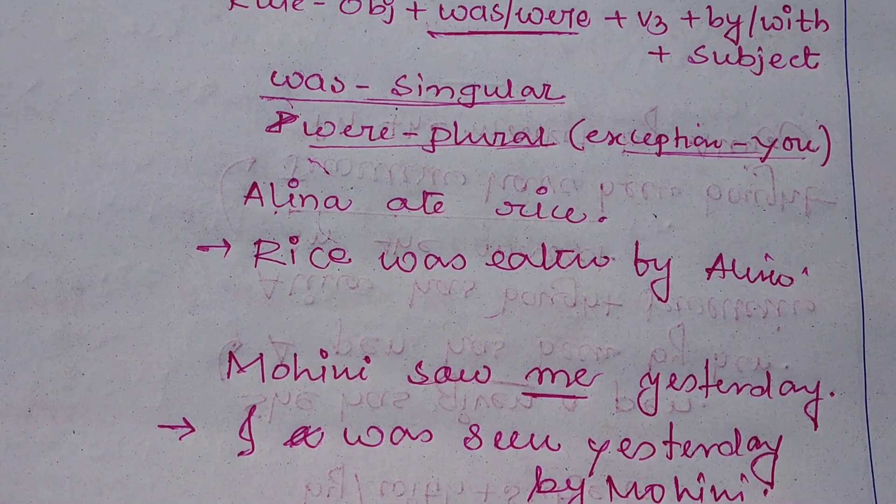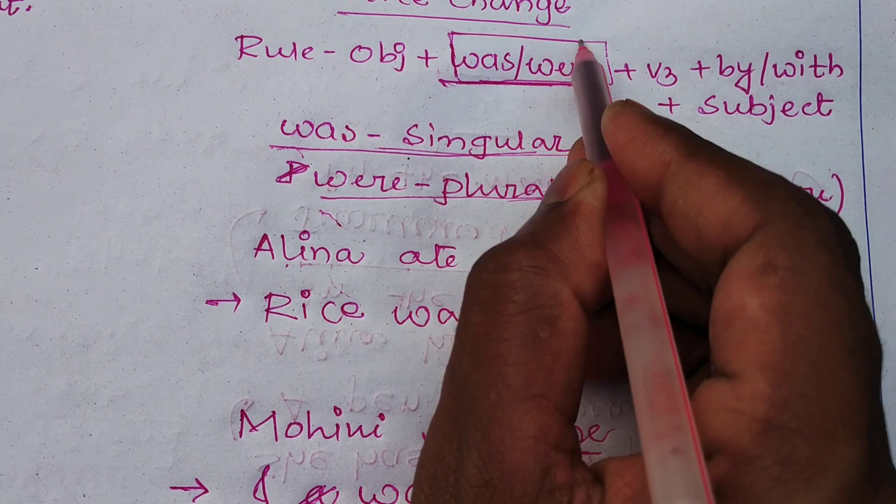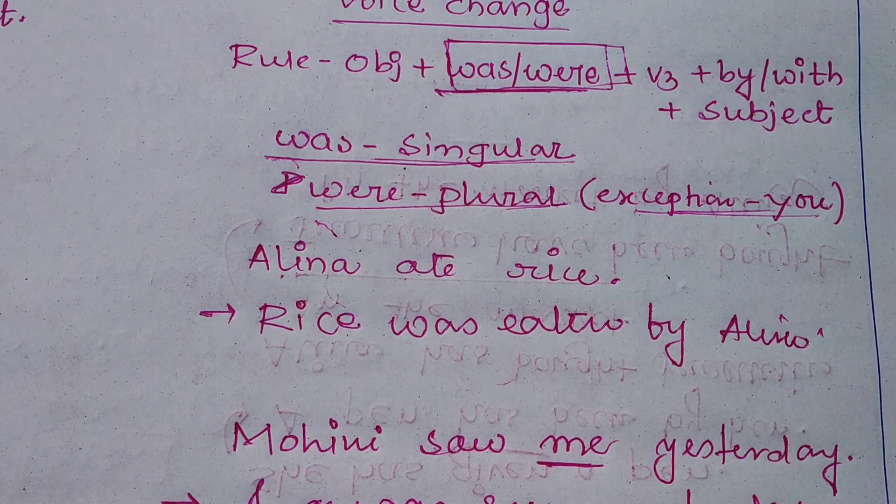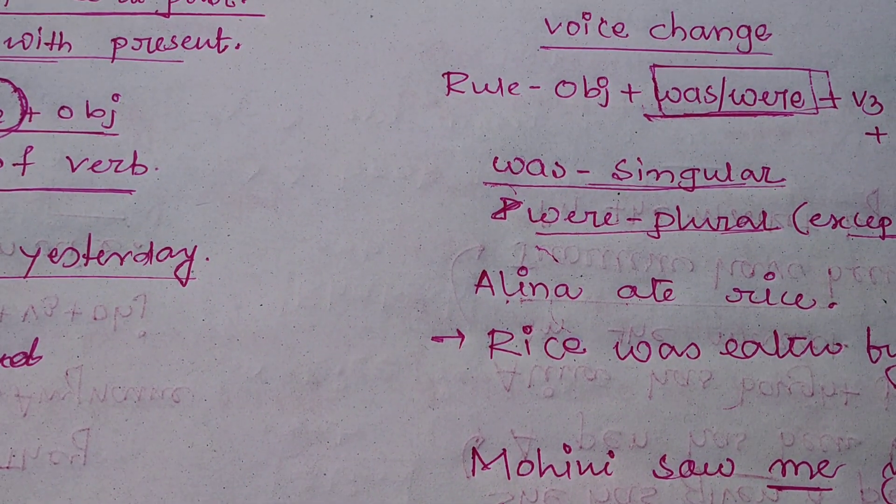But the difference is here in present tense you can use am, is, are, and in past tense you can use was, were. Thank you, please subscribe and share my channel.